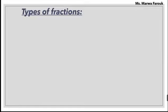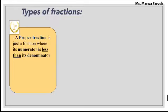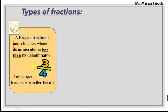We have three types. The first type is proper fraction. What is the proper fraction? A proper fraction is the fraction that its numerator is less than its denominator, like this one. I have three fourths. As you can see here, three, the numerator, is smaller than four, the denominator. So when the numerator is smaller than the denominator, it's called a proper fraction. And we have to know that any proper fraction is smaller than one.